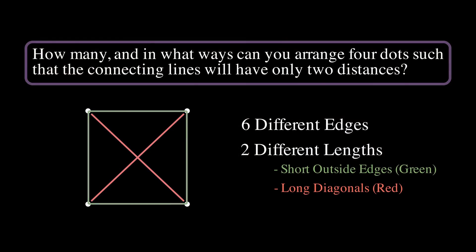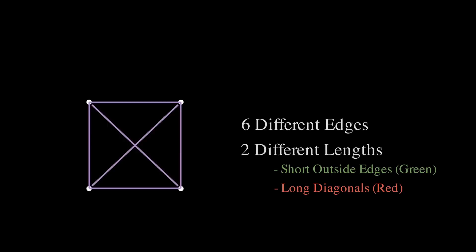Now, luckily for you, this is a math puzzle with a definitive answer. Before I go through it though, I'll let you in on one key piece of information. Including the square, there are six possible configurations that fulfill our two distances requirement.